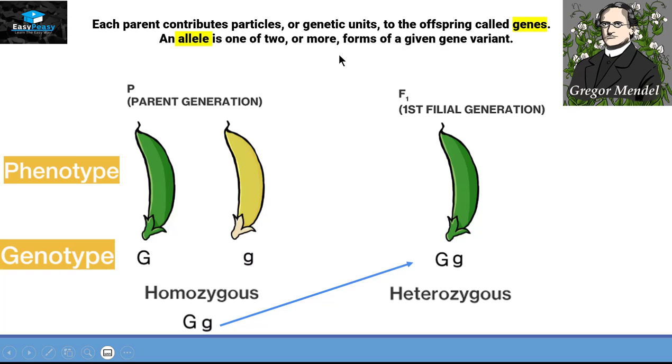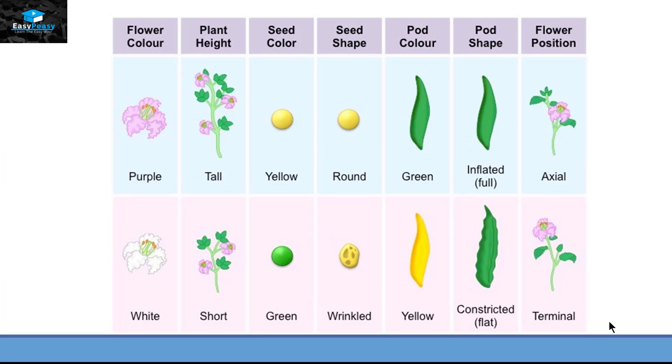Now this yellow color doesn't appear in the first filial generation. So the green color is the dominant trait and the yellow color is the recessive trait. This information is similar for every characteristic of the pea plant. We have a dominant trait and we have a recessive trait.